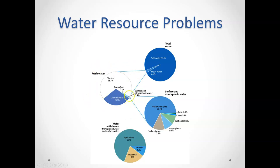Looking at that two and a half percent of fresh water, most of it still isn't available to us because it's locked up in glaciers and permafrost. Permafrost is liquid water in the ground that is always frozen. Then we have groundwater — liquid water in the ground that we can access — and surface and atmospheric water, which makes up a tiny 0.4% of all water on Earth. Most surface water is found in lakes, but also in soil, wetlands, rivers, and the atmosphere.